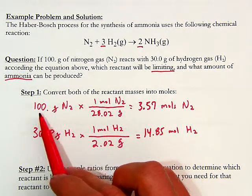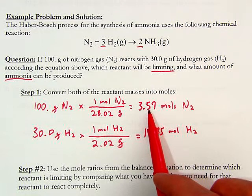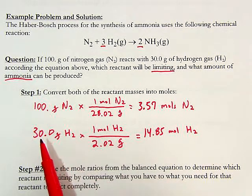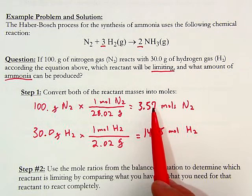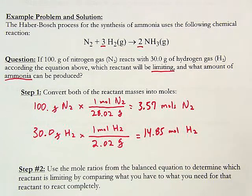Notice that things have flipped: we started with 100 grams of nitrogen which is only about 3.5 moles, but 30 grams of hydrogen is almost 15 moles. Even though we have more moles of hydrogen and fewer moles of nitrogen, that still doesn't tell us which one will run out first — we still have to do the math.